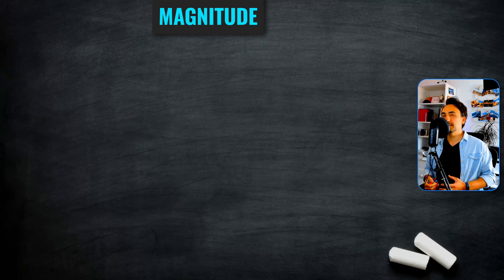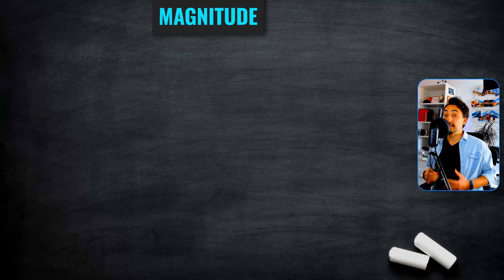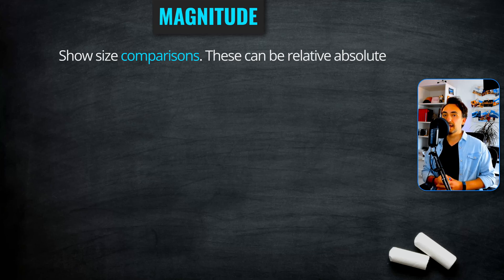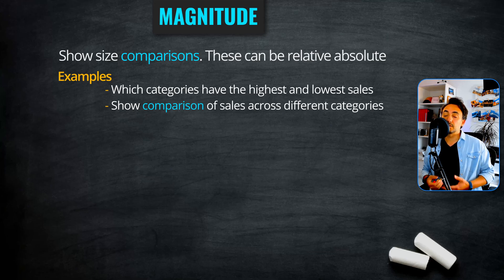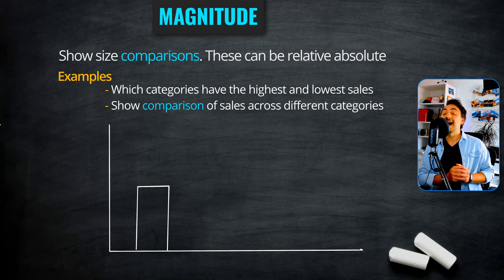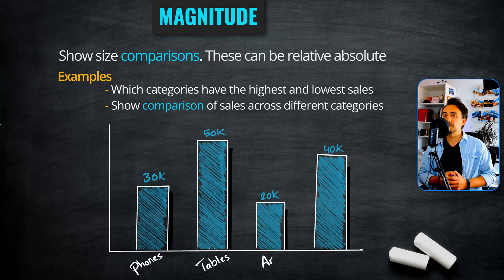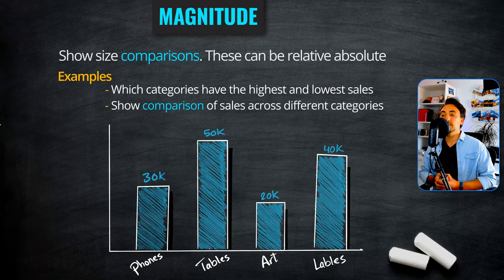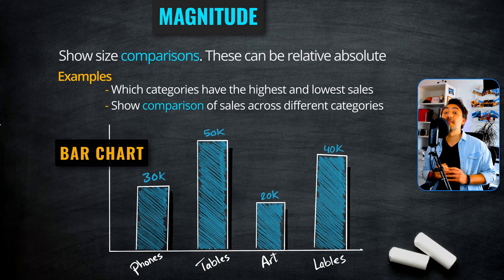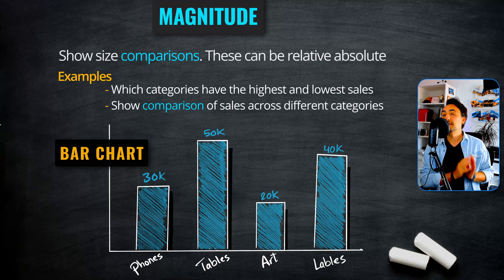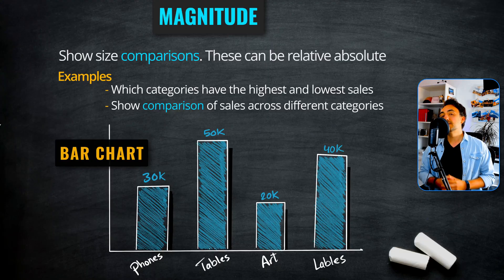Now we have the magnitude category, sometimes called the size category. It uses size to compare values, using relative or absolute values. For example, if the task is to find the highest and lowest sales of categories, or to compare different categories by sales in one chart, then we're talking about the magnitude category. The best chart for this is the bar chart, because it makes it very easy and clean to compare values by comparing the length of bars.